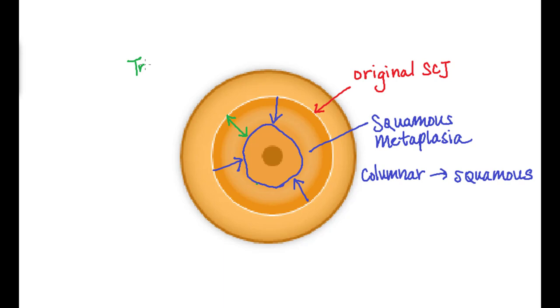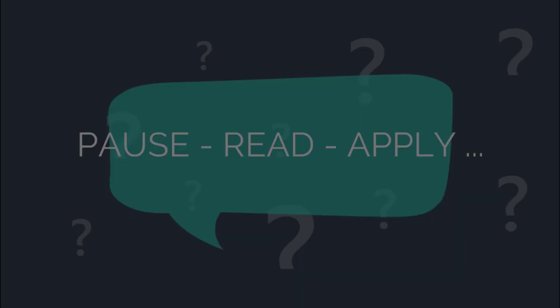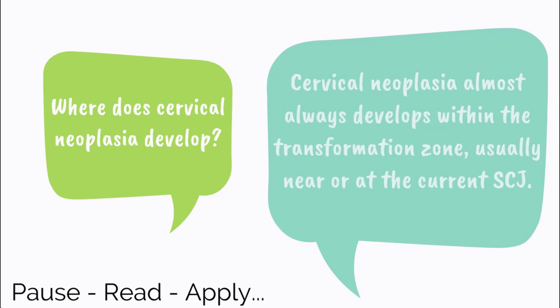Let's pause, read, and apply. Where does cervical neoplasia develop? Cervical neoplasia almost always develops within the transformation zone, usually near or at the current SCJ. Immature cells are the most vulnerable to the oncogenic effects of HPV and co-carcinogens.